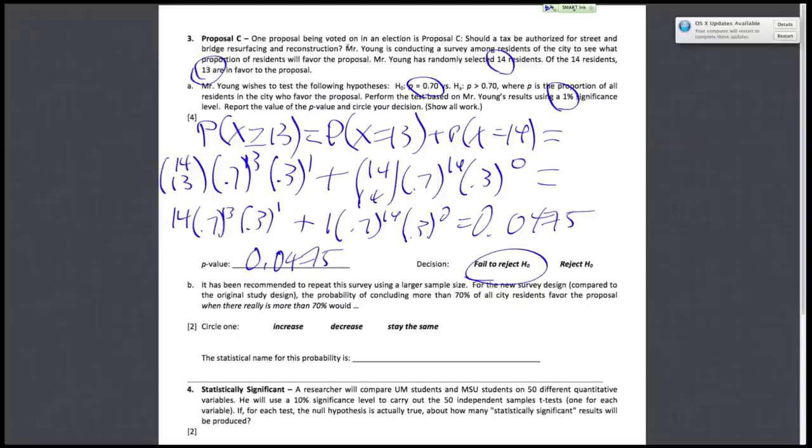Okay, so moving on. Part B of question 3 has been recommended to repeat the survey using a larger sample size. For the new survey design, the probability of concluding more than 70% of all the city residents favor the proposal when there really is more than 70% would increase, decrease, or stay the same. So for this question, you need to recognize that the probability of concluding more than 70% of all city residents favor the proposal when there really is more than 70% is basically just another definition for statistical power.